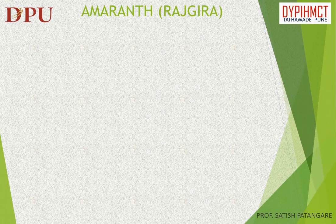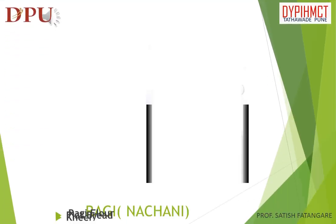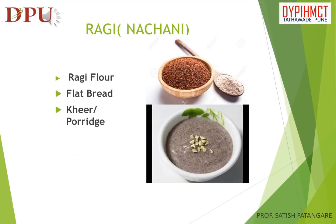In this slide we will discuss about amaranth or rajgira. Amaranth seeds are tan or light brown in color and are about the size of poppy seeds. The by-products of amaranth or rajgira are amaranth flour and amaranth chips. The by-products of ragi or nachni are ragi flour, flatbread, and gere or porridge.